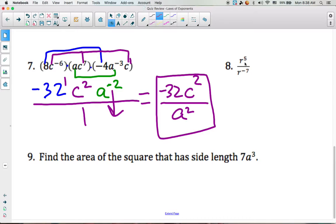Problem number 8, we have r to the fifth divided by r to the negative 7. Our exponent rule says that when you divide the same base, you subtract the exponents. That's 5 minus negative 7. When you have a minus minus, it becomes plus. So 5 plus 7 will give us 12.